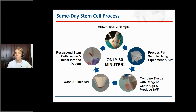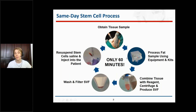The stromal vascular fraction includes a mixture of cells such as mesenchymal stem cells, hematopoietic stem cells, endothelial and progenitor cells, as well as other cells that will have various growth factors and cytokines associated with it.